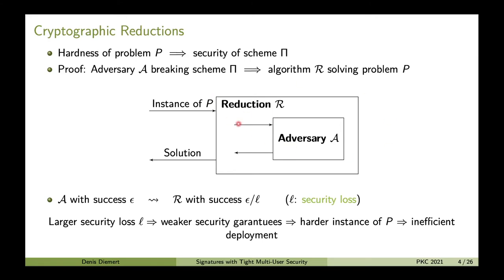This works as depicted on the slide. The reduction gets an instance of P, simulates the security experiment for the adversary A, and in the end takes the output of the adversary A and tries to extract the solution to the problem from that output. If we have an adversary A with success ε, then we get a reduction R with success ε divided by L, where L is called the security loss. Keep the security loss in mind — this will become important later.